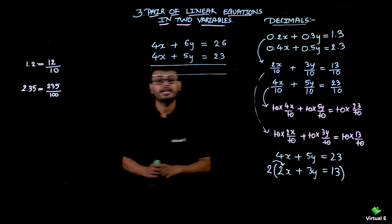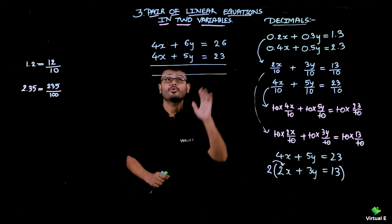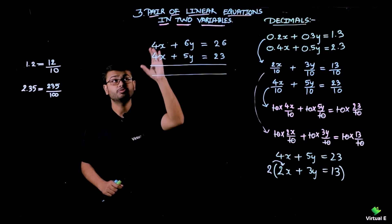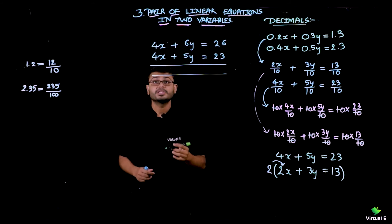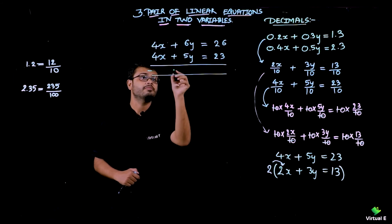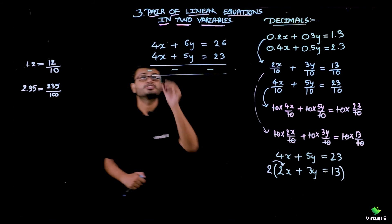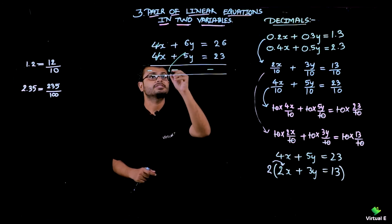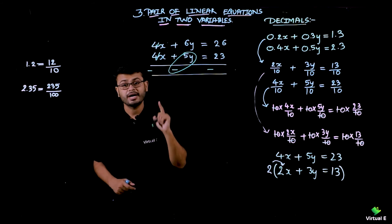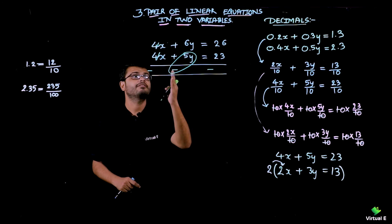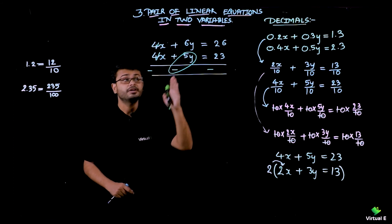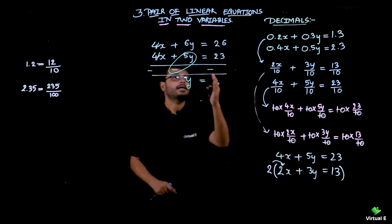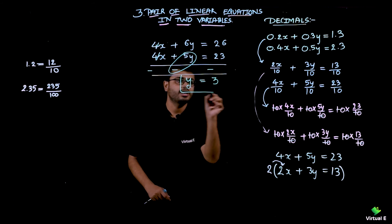I am subtracting to eliminate x. Since both coefficients of x are 4 with the same sign, I subtract. The 4x terms cancel. What's left: the new sign of 5y is negative, so we have 6y minus 5y, and 26 minus 23. That gives y equals 3. So my solution for y is 3.